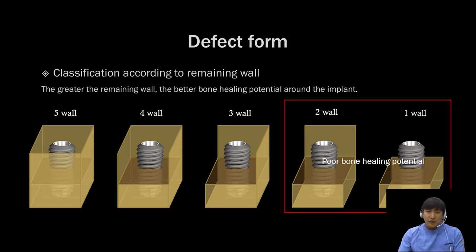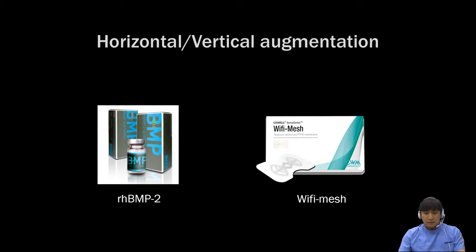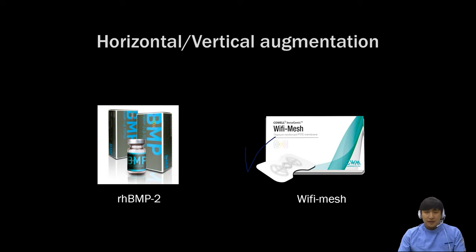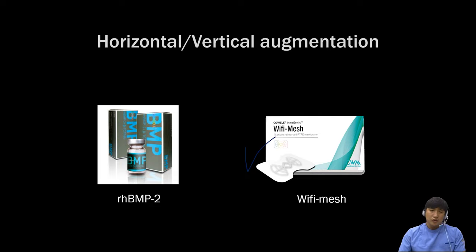I am doing three-dimensional augmentation using rhBMP2 and titanium mesh, especially in one or two wall defects. I use rhBMP2 and titanium mesh for horizontal and vertical augmentation. This is Wi-Fi mesh. I think this is a new kind of titanium mesh. Today, I want to focus on Wi-Fi mesh, not rhBMP2, so I will explain about rhBMP2 briefly.